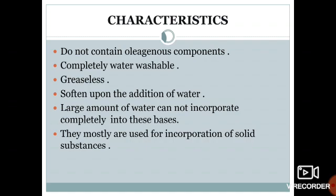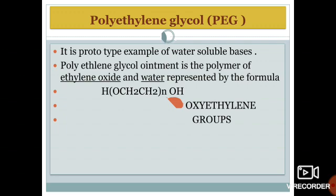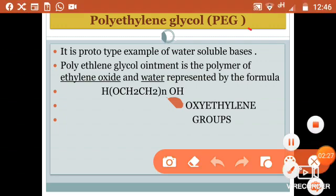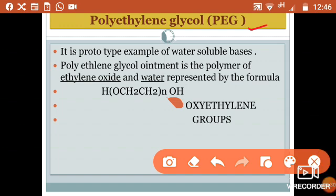The most important characteristic example of a water-soluble base is polyethylene glycol, abbreviated as PEG. PEG is the prototype example — prototype meaning a representative model or sample, which in Urdu we call 'namuna.' PEG is the standard water-soluble base used in pharmaceutical formulations.